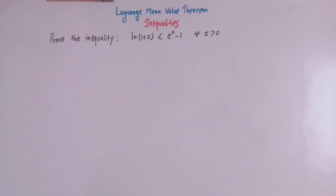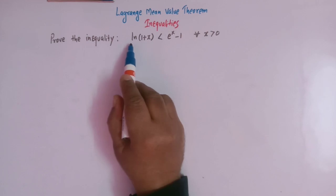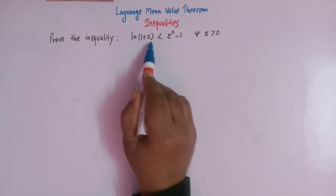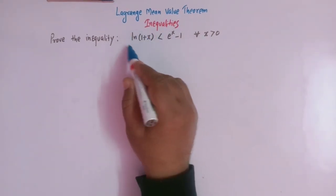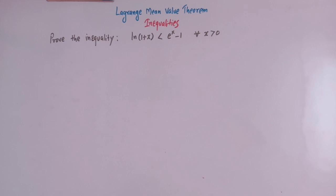Hello viewers. In today's class we are going to discuss one important application of Lagrange's mean value theorem regarding the proof of some important inequalities. So here we will use Lagrange's mean value theorem to prove this inequality in which we have to prove that log(1+x) is less than e^x minus 1 for all x greater than 0. So let us start and apply the conditions of Lagrange's mean value theorem to prove this inequality.